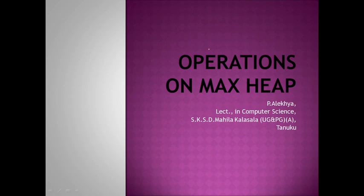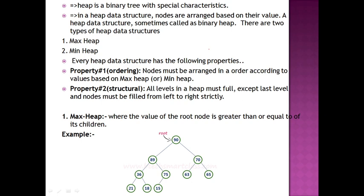We already know what is max heap. Max heap means a heap is a binary tree with special characteristics. This heap is also a binary tree with special characteristics. In a heap data structure, nodes are arranged based on their value. The heap data structure is sometimes called a binary heap.